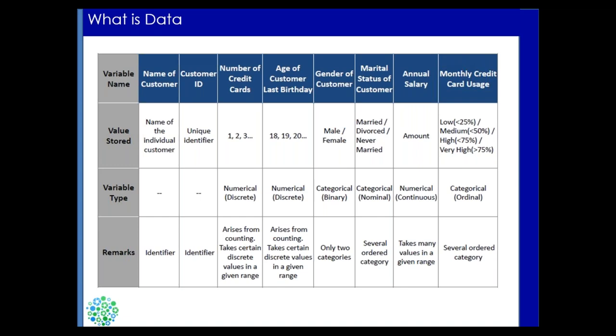For monthly credit card usage, if you divide by percentage of credit limit used into bands — lower than 25%, medium 25–50%, high 50–75%, very high 75%+ — these four ordered categories make this an ordinal variable. Annual salary is a numerical continuous variable. Any amount can appear like 100.12, 100.13, 200.02, and it can take any value from minus infinity to positive infinity on a number line.